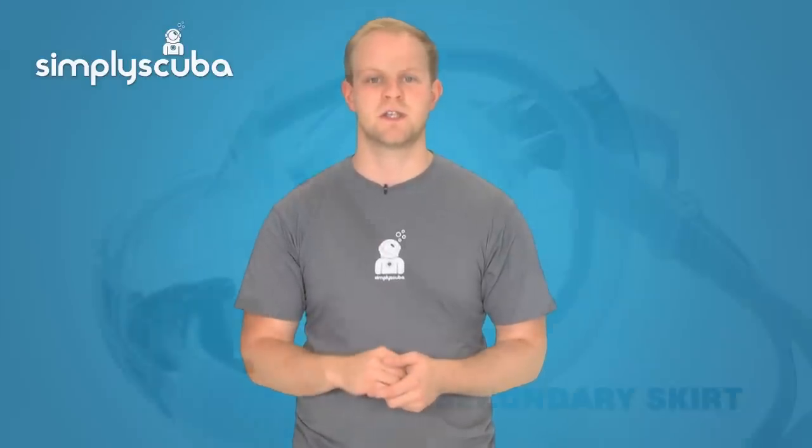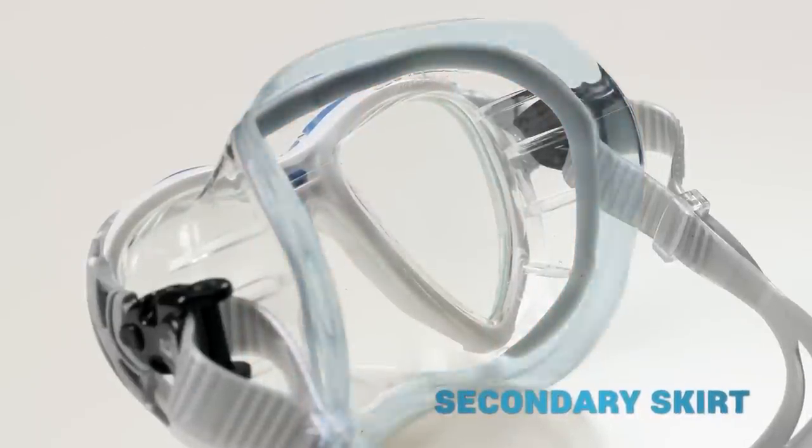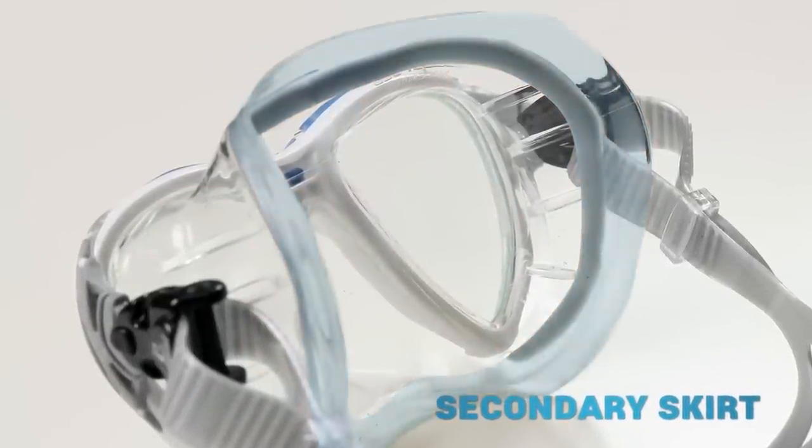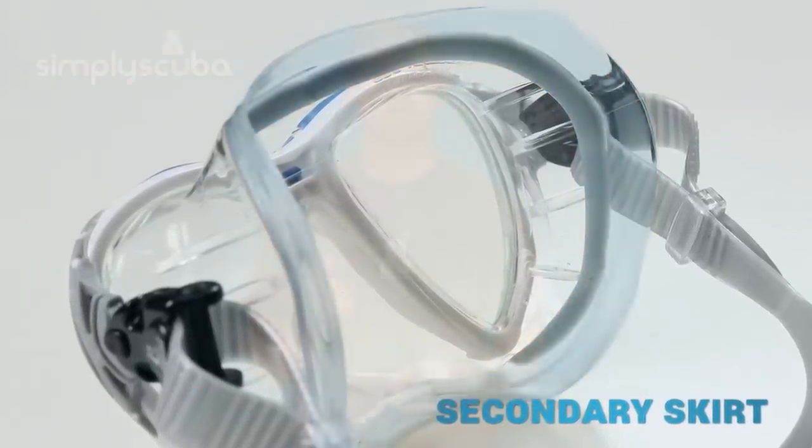The role of the skirt is simple but critical to provide a good seal to keep the air in and water out. The one feature that can be found on all good mask skirts is a secondary skirt. The secondary skirt increases the surface that is able to seal against the skin and significantly reduces the possibility of a leak.